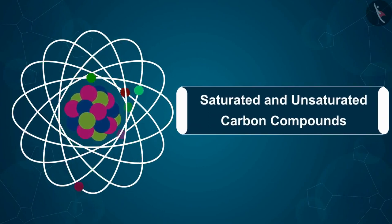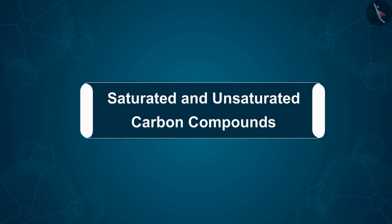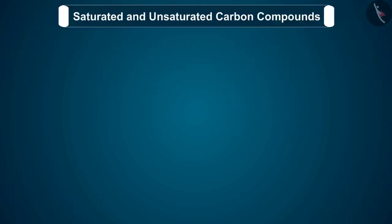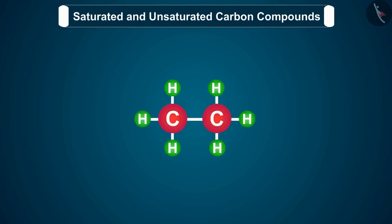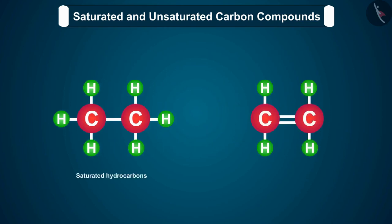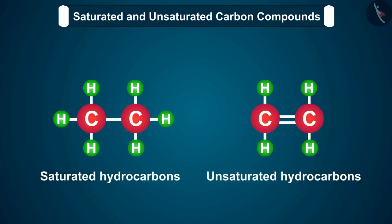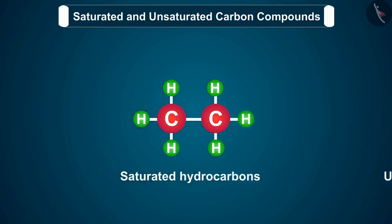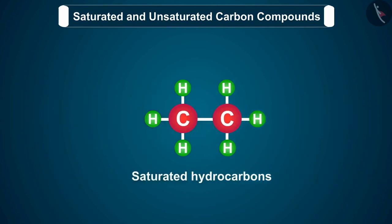Welcome to this video session. The topic that we are going to cover in this session is saturated and unsaturated carbon compounds. Before we move ahead, we should know that a compound made up of hydrogen and carbon only is called a hydrocarbon. These hydrocarbons are of two types: saturated and unsaturated. First, we will discuss saturated hydrocarbons, which are also called alkanes.